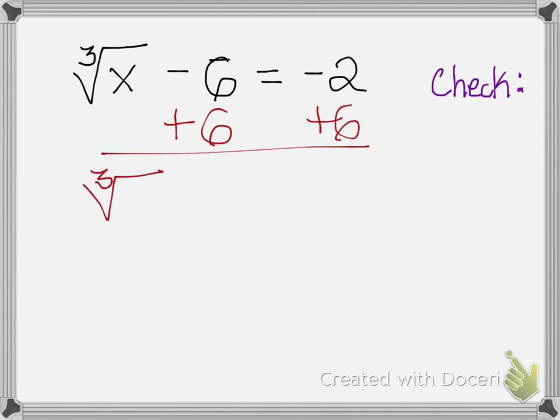When I do that, I'll bring down the cube root of x and it's now going to equal positive 4. Now, to get rid of the cubed root, I have to do the inverse, which means raise it to the power of 3. Whatever you do to one side, you must do to the other side of the equation.